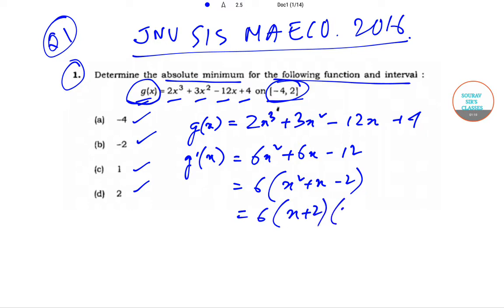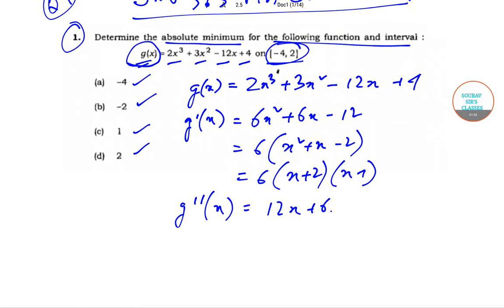Now let us find out g''(x). So g''(x) is given by 12x + 6. Now for maximum or minimum, let us write down: for maximum or minimum...